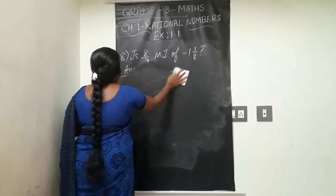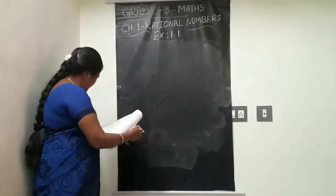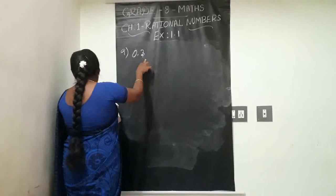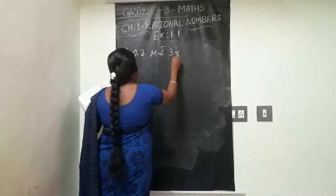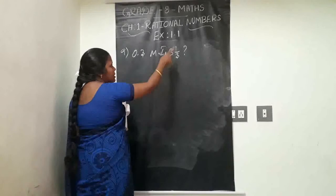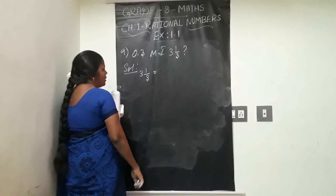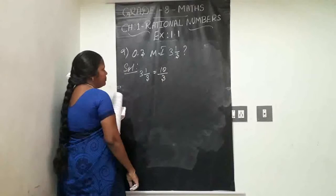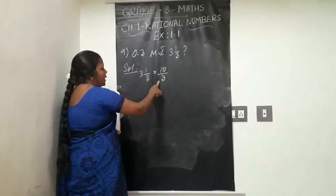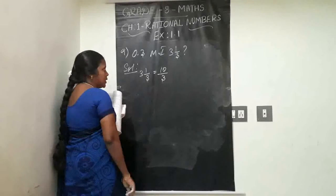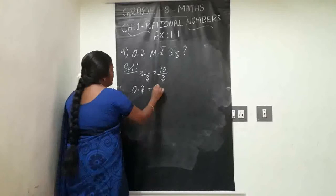Question nine: is 0.3 the multiplicative inverse of 3 and 1/3? Why or why not? First, take 3⅓ — it is in mixed form. Change to improper: 3 times 3 is 9, plus 1 is 10, denominator is 3. So 3⅓ becomes 10/3. Next, convert the decimal 0.3 to a fraction: 0.3 equals 3/10.